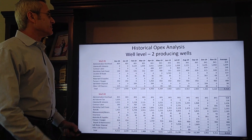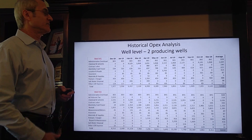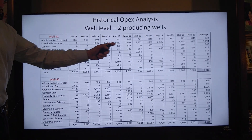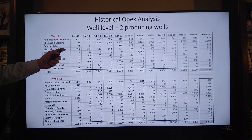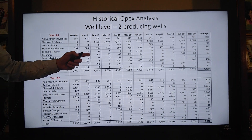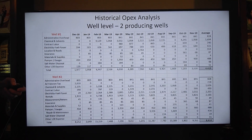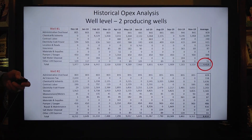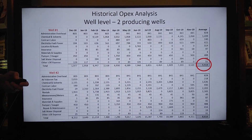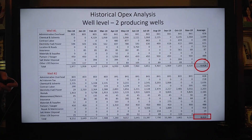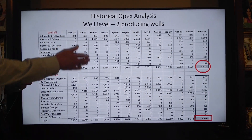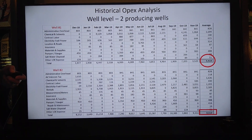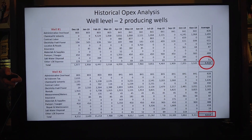Here's an example of some historical operating expense data that the operator has provided for us to do the reserves evaluation. We have two wells — well one and well two — and we have about 12 months of historical data. That gives us a good amount of data to look at how much it costs each month to operate these wells. For instance, the average for well number one is $4,419 per month, while well two is $8,610 per month. Those averages can be used in economic projections as a fixed cost, and we use that method a lot on individual wells.